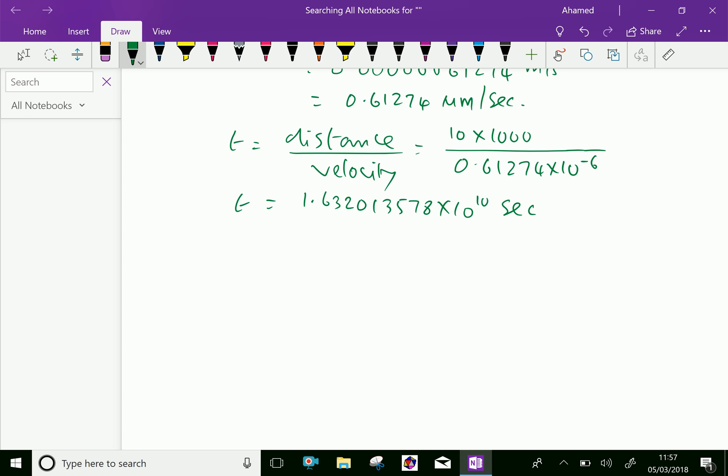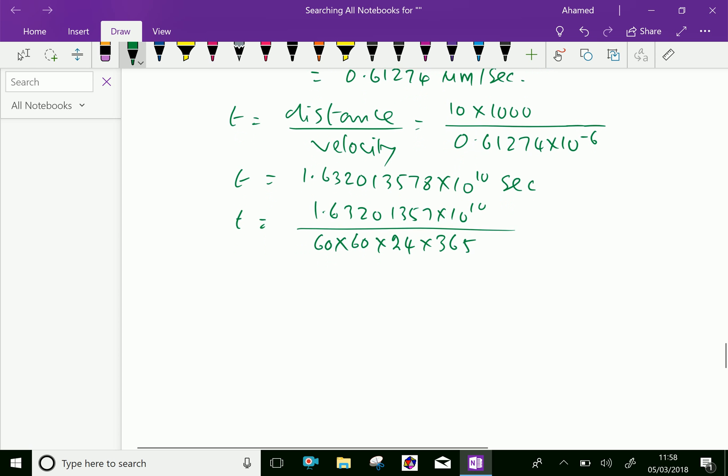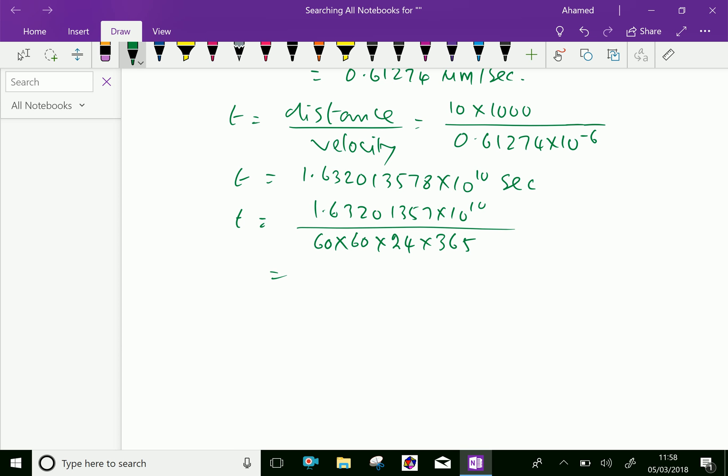We will convert this to years: 1.632013578×10¹⁰ over 60 seconds is 1 minute, another 60 is 1 hour, 24 hours for 1 day and 365 days. Divided by 60×60×24×365 equals 517.5 years.